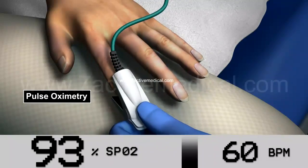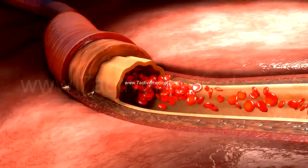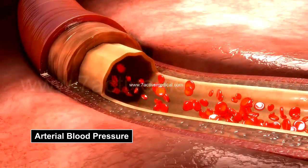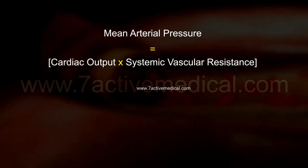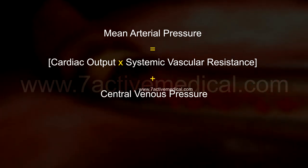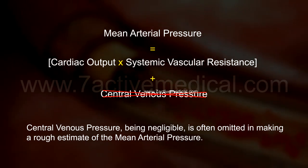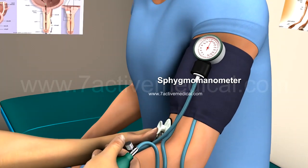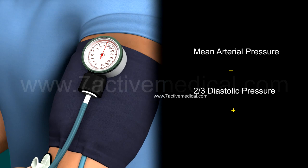Oxygen concentration is measured by pulse oximetry or through arterial blood gas analysis. The factors that influence tissue perfusion also influence arterial blood pressure, which could be a good indicator of the severity of shock. Mean arterial pressure can be measured by the formula: Mean arterial pressure equals cardiac output multiplied by systemic vascular resistance plus central venous pressure. Central venous pressure, being negligible, is often omitted. Mean arterial pressure can also be calculated using a sphygmomanometer with the formula: MAP equals two-thirds of diastolic pressure plus one-third of systolic pressure.